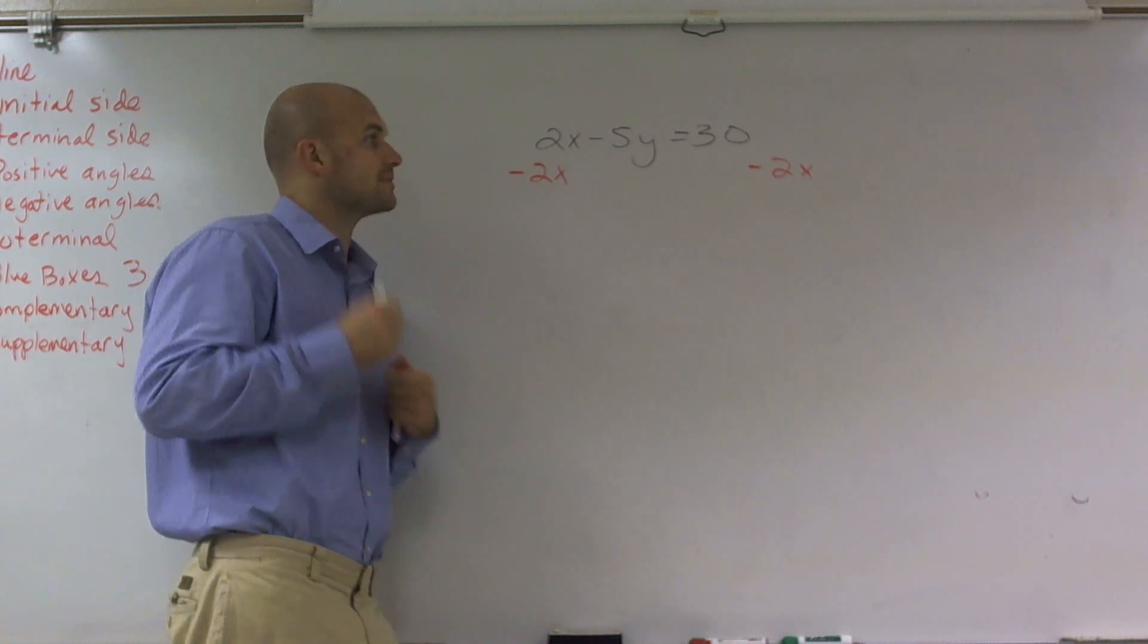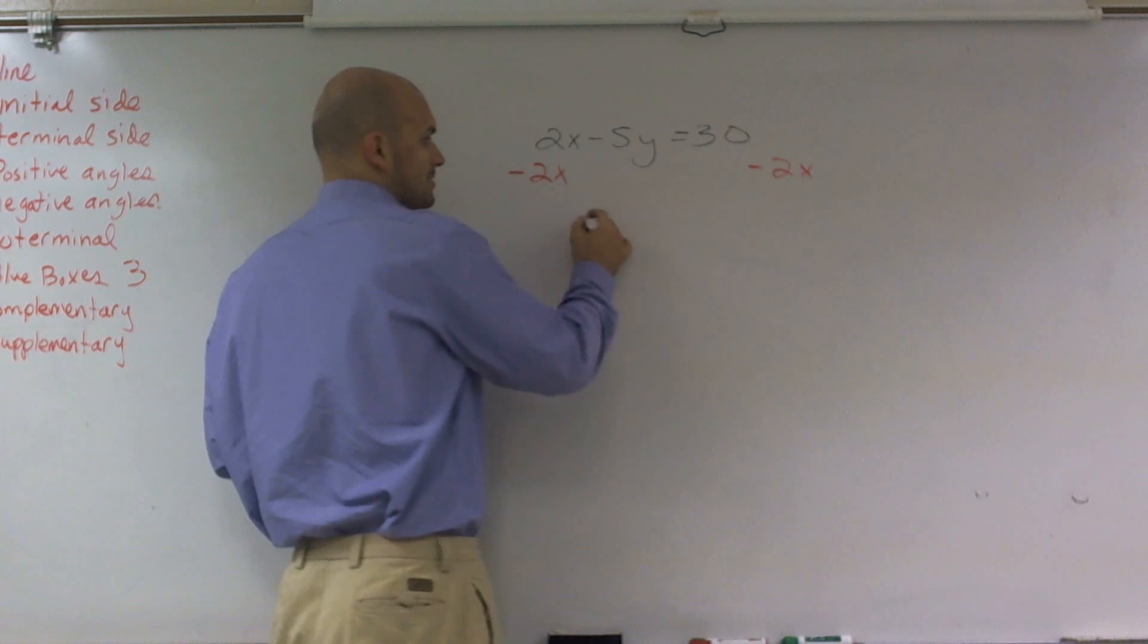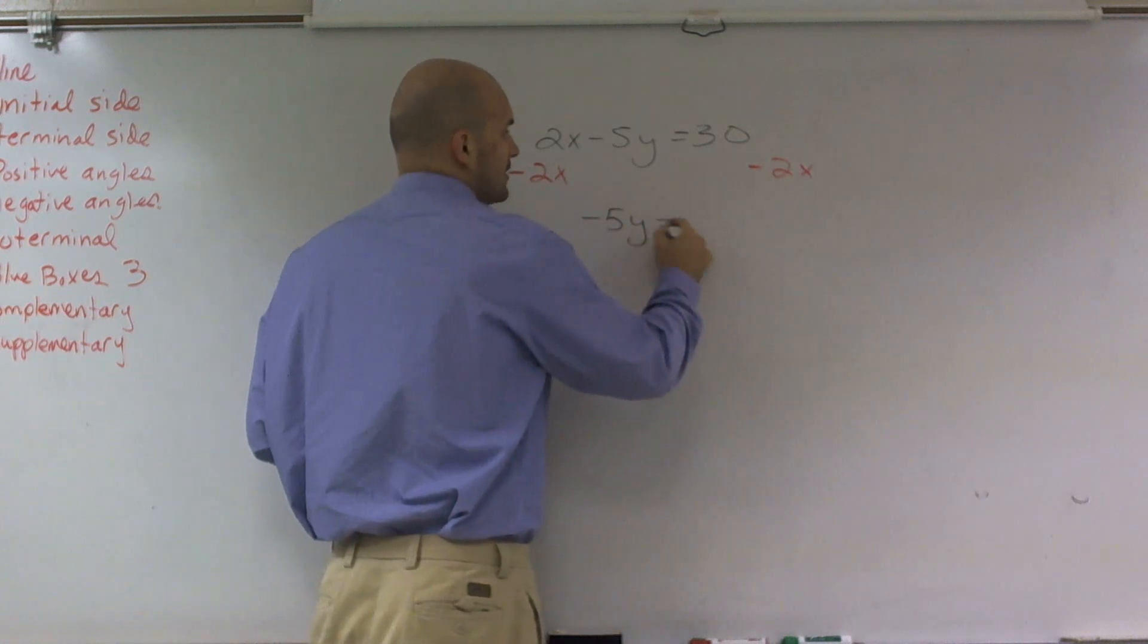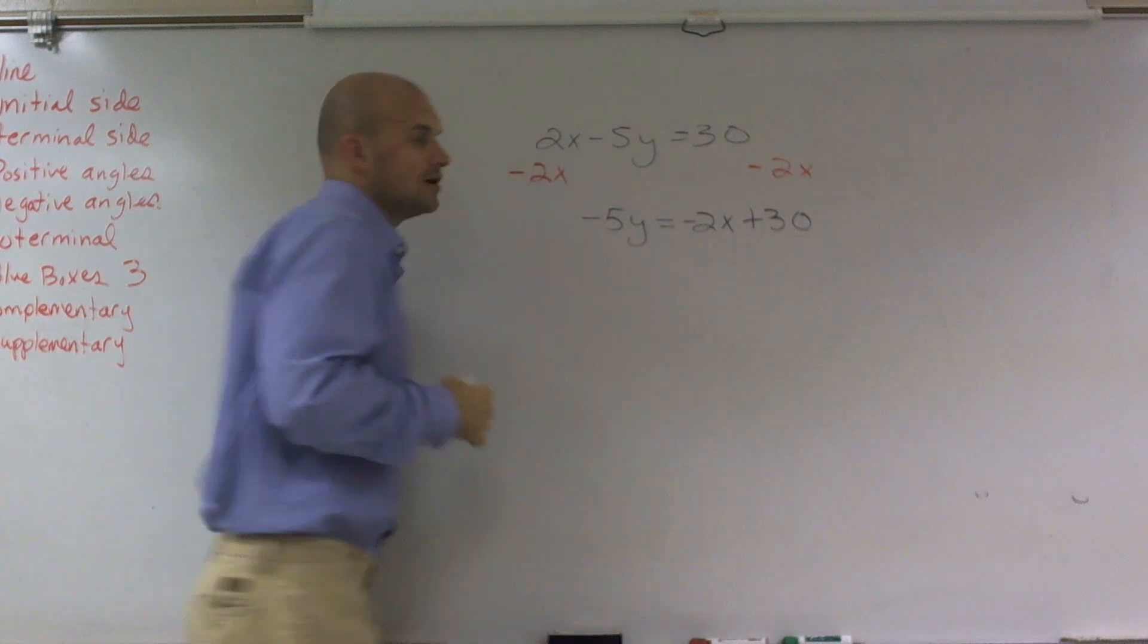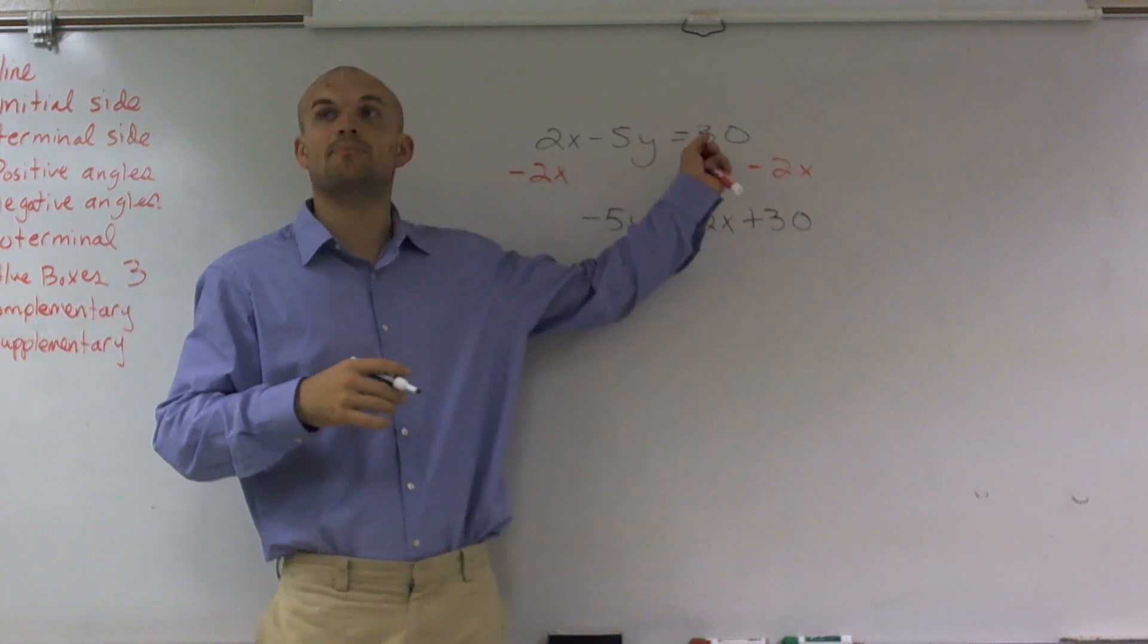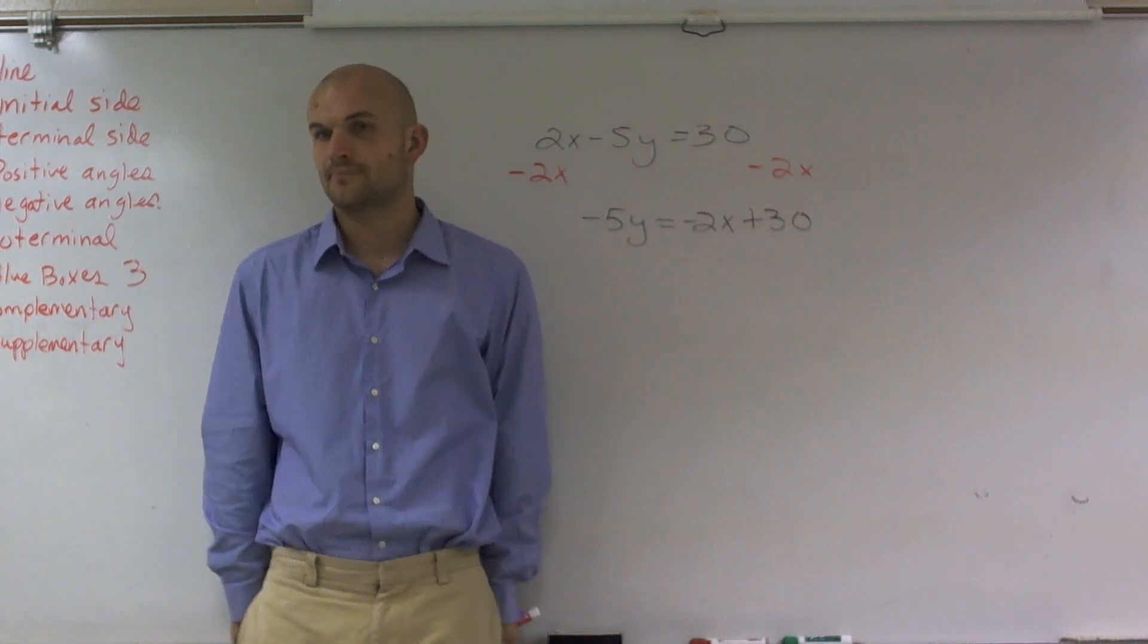So then the next step is this is going to cancel out, so I'm left with negative 5y equals negative 2x plus 30. All right? All I did was I wrote the negative 2x. That's still a positive 30, so I wrote plus 30.